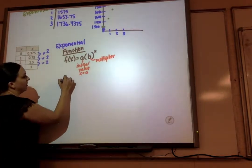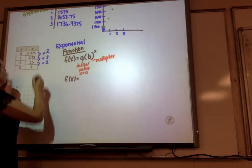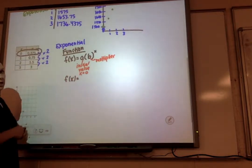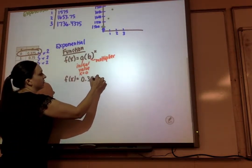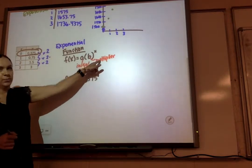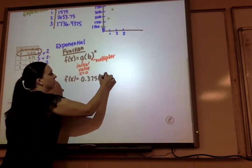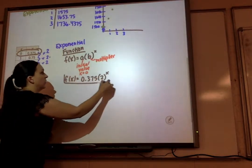So my function is f of x equals my initial value, right here. When x is 0, my initial value is 0.375. And we're multiplying by 2, that's my multiplier, to the x power. That's my function.